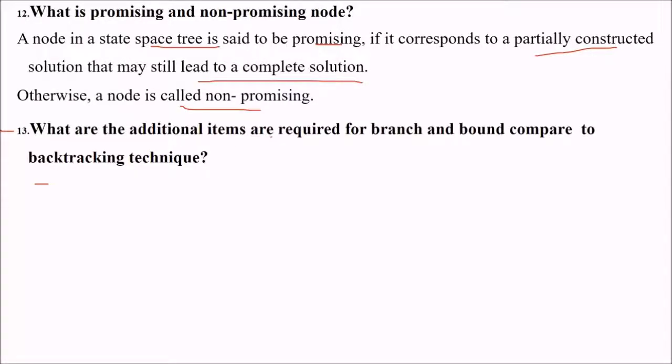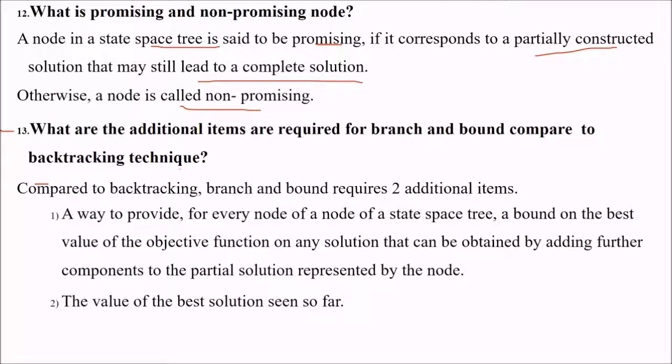What are the additional items required for branch and bound compared to backtracking technique? Branch and bound requires two additional items. First is a way to provide for every node a bound on the best value of the objective function on any solution obtained by adding further components to the partial solution represented by the node. Second is the value of the best solution seen so far.